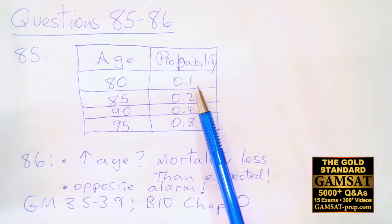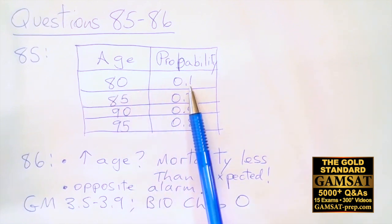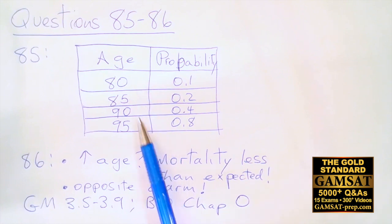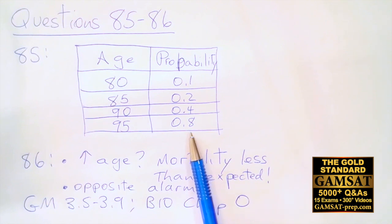We are told we start with a mortality rate of 0.1 with the probability of a human dying in a particular year doubling every five years. So at age 80 we have 0.1, then every five years we double to 0.2, 0.4, 0.8. This is the expectation for a 95-year-old, and so for 85 the answer is A.